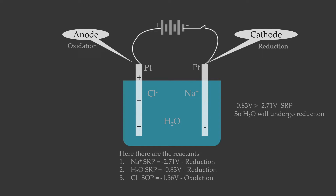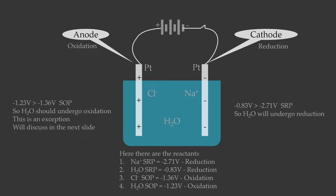For the anode, we use the standard oxidation potential. The standard oxidation potential for chloride ions is −1.36 V. To obtain standard oxidation potential, we take the standard reduction potential and change the sign. The standard oxidation potential for water is −1.23 V. Since −1.23 V is greater than −1.36 V, water should undergo oxidation — but that does not happen here because this is an exception. Instead of water, the chloride ions will undergo oxidation.